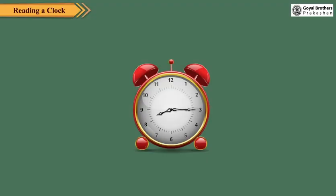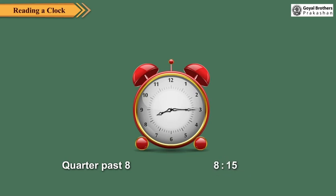Again, look at this clock. Here, the minute hand is at 3. The hour hand is between 8 and 9 and closer to 8. The time is 15 minutes after 8. We write it as quarter past 8 or 8.15. So when the minute hand is at 3, the time is quarter past the hour.